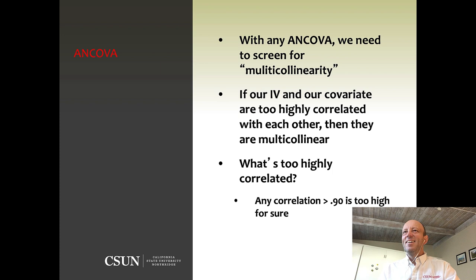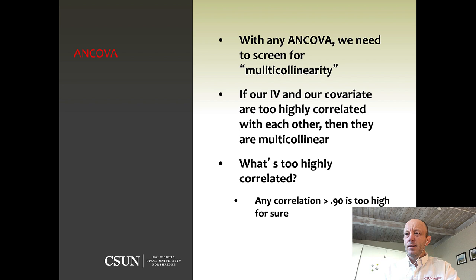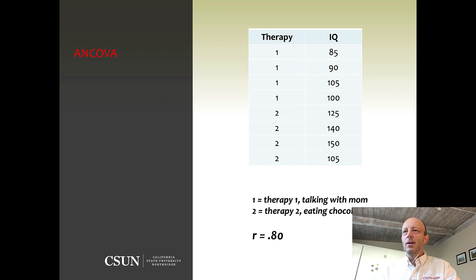The other thing we need to do is screen for multicollinearity. If you remember this from the multiple regression lesson, it's the same thing — you just need to make sure your covariate and your independent variable are not too highly correlated. Typically greater than 0.90 will knock you out of doing this; you need a correlation less than 0.90. Here we have something high at 0.80, so we'll proceed. In real life, a correlation this high but not quite 0.90 is a red flag, but you can still proceed.